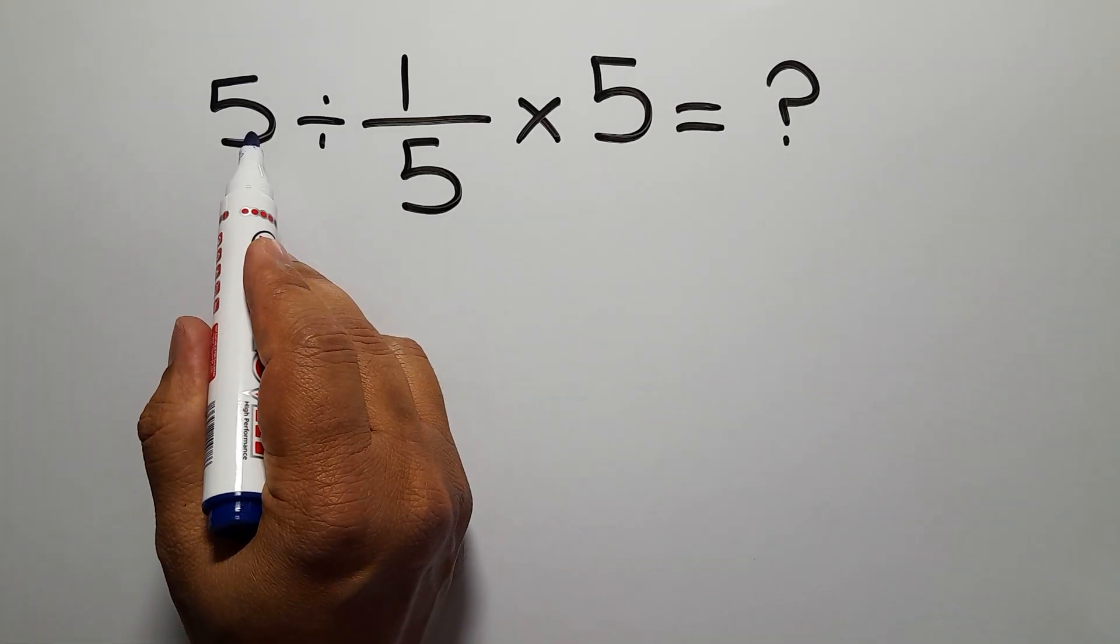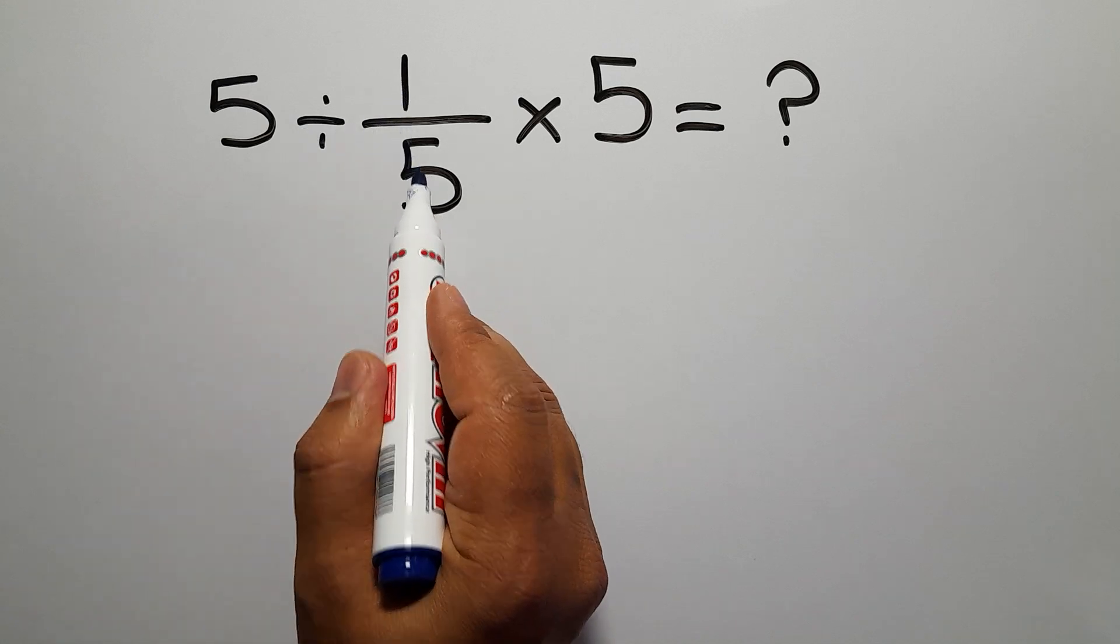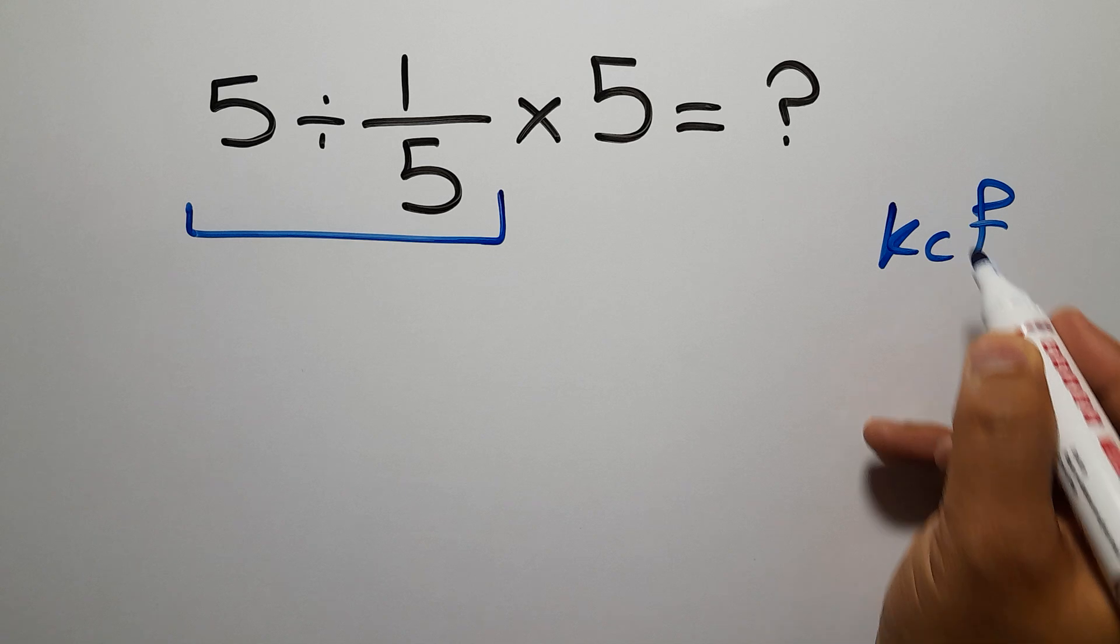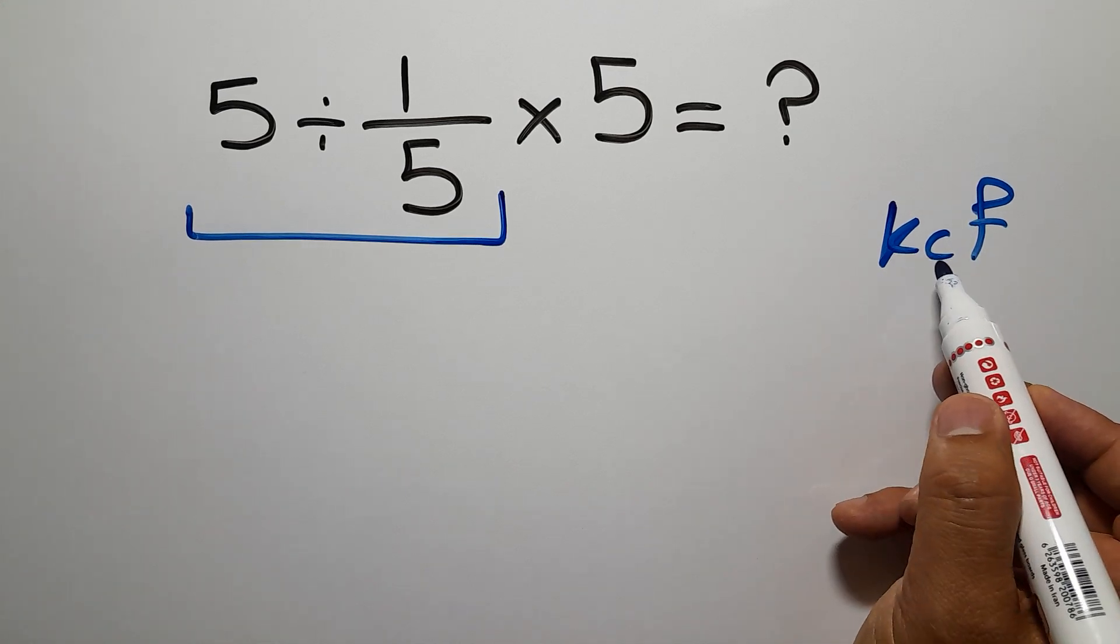So 5 divided by 1 over 5, according to the KCF rule: K stands for keep, C stands for change,